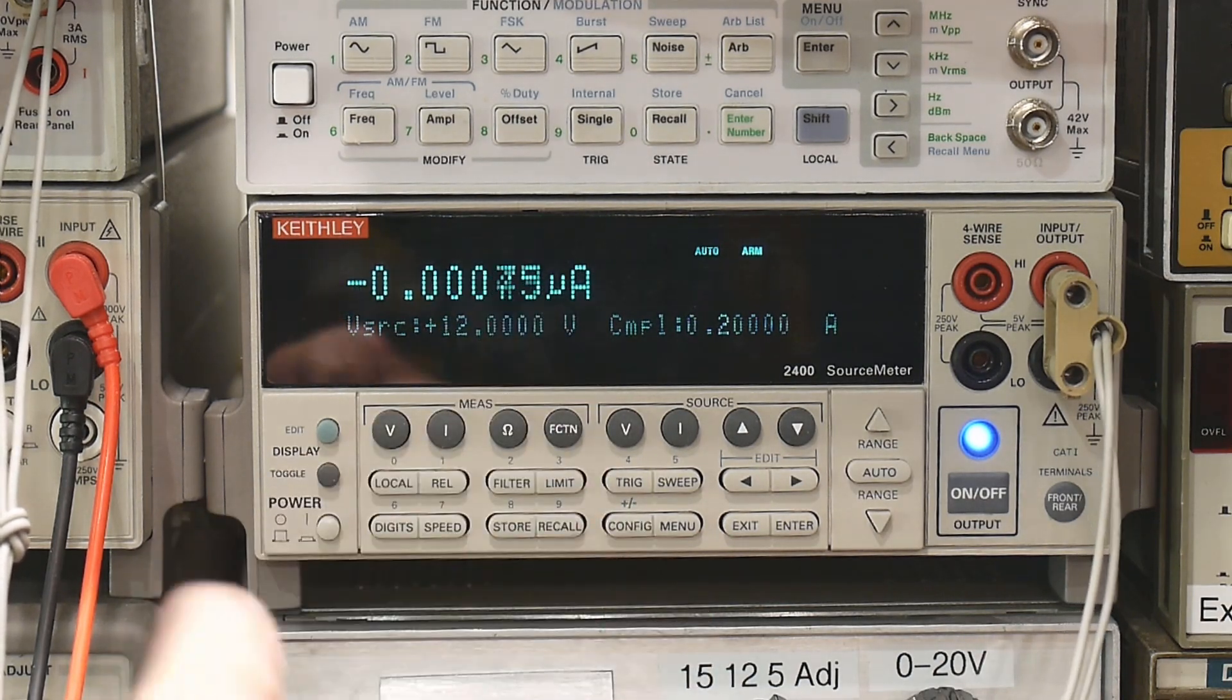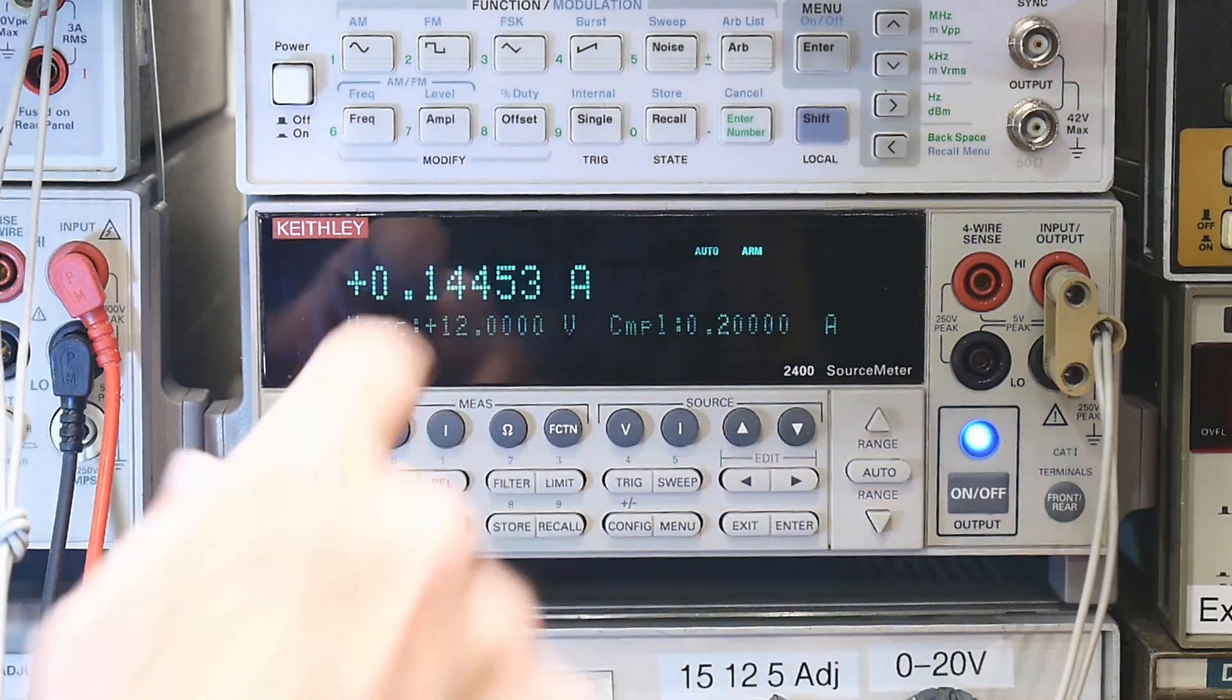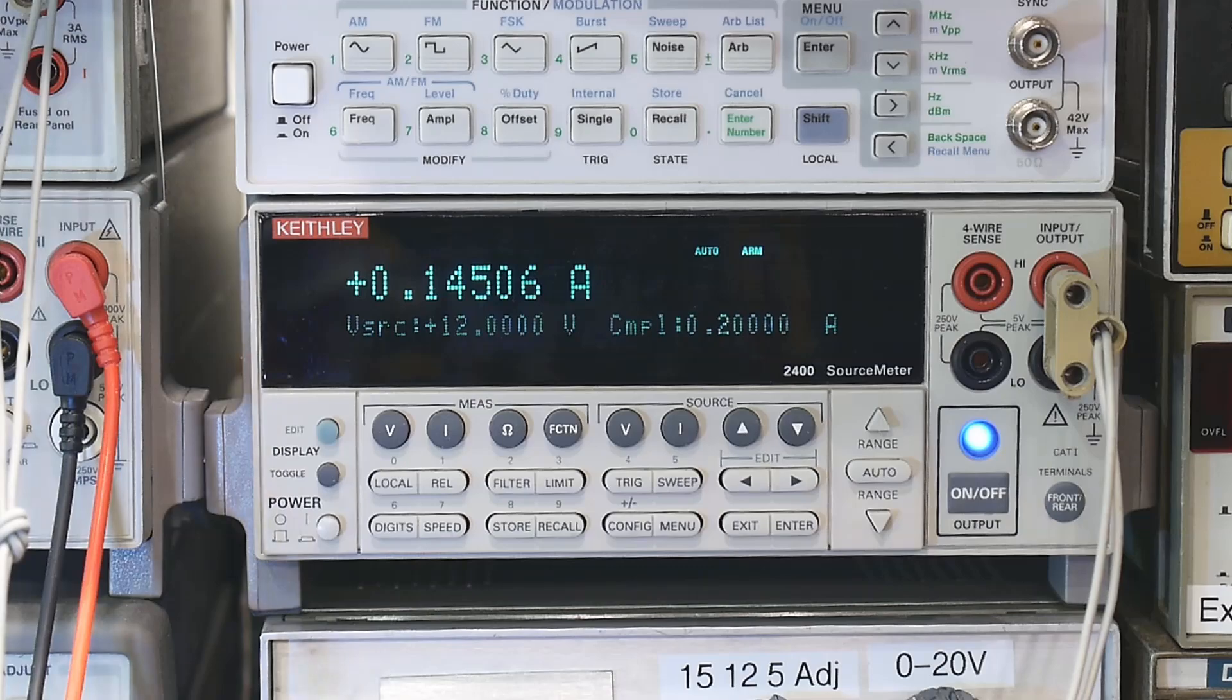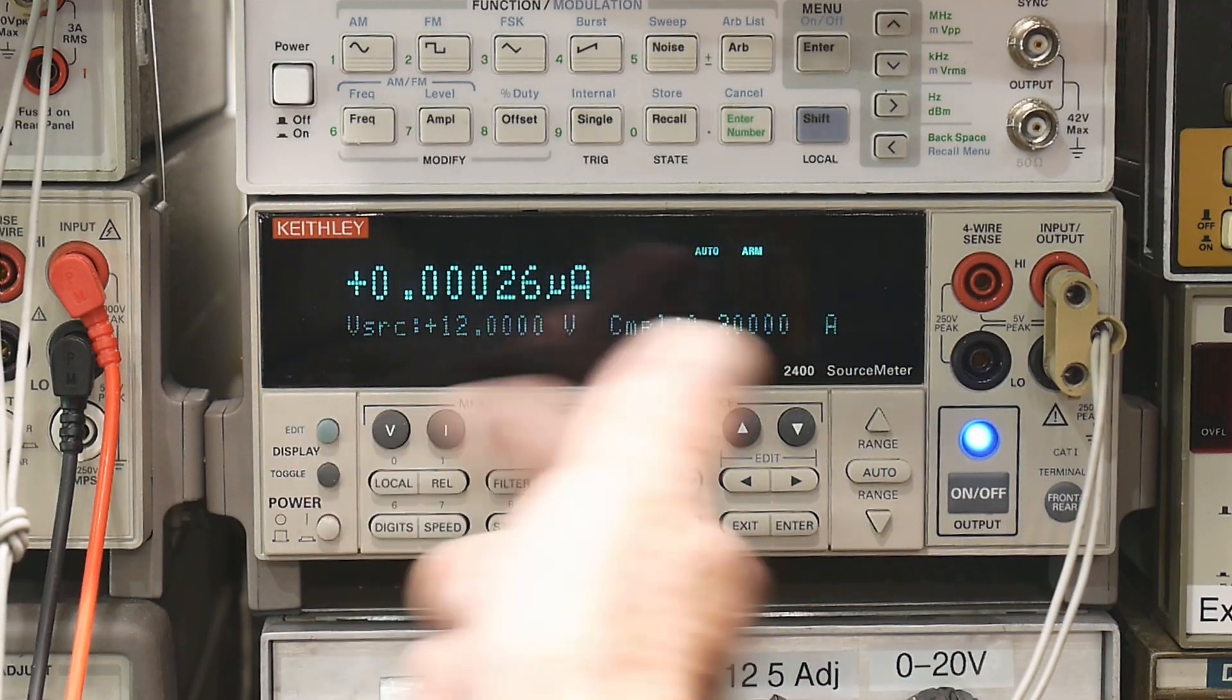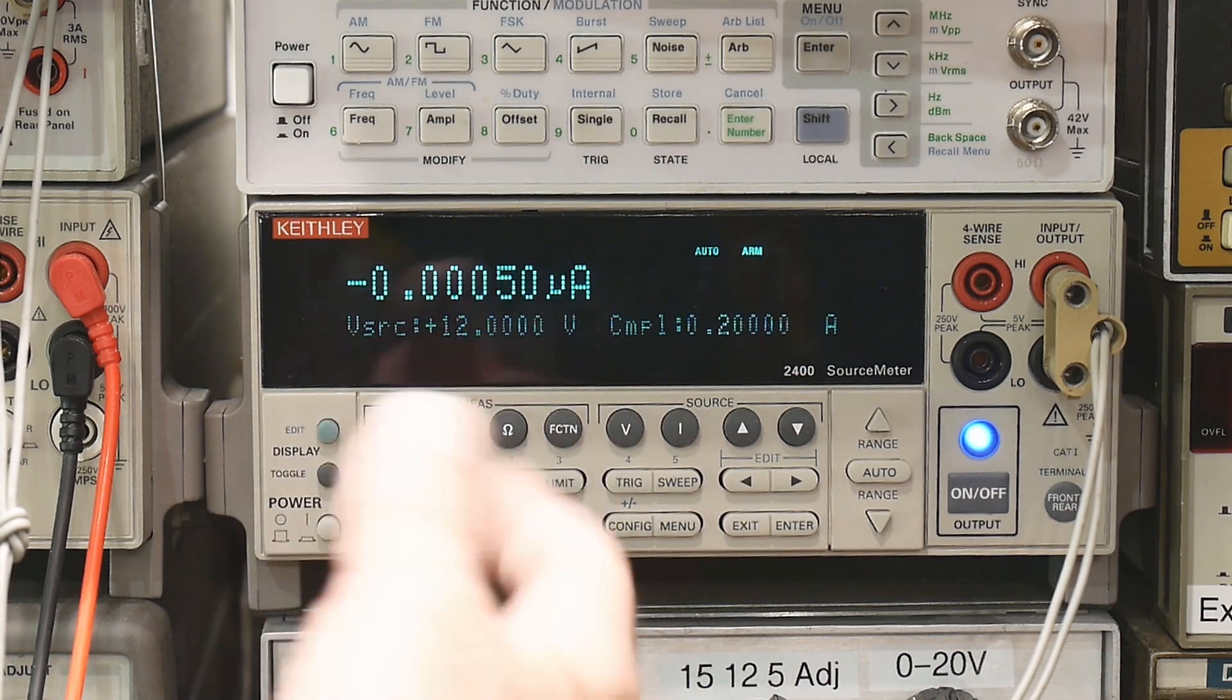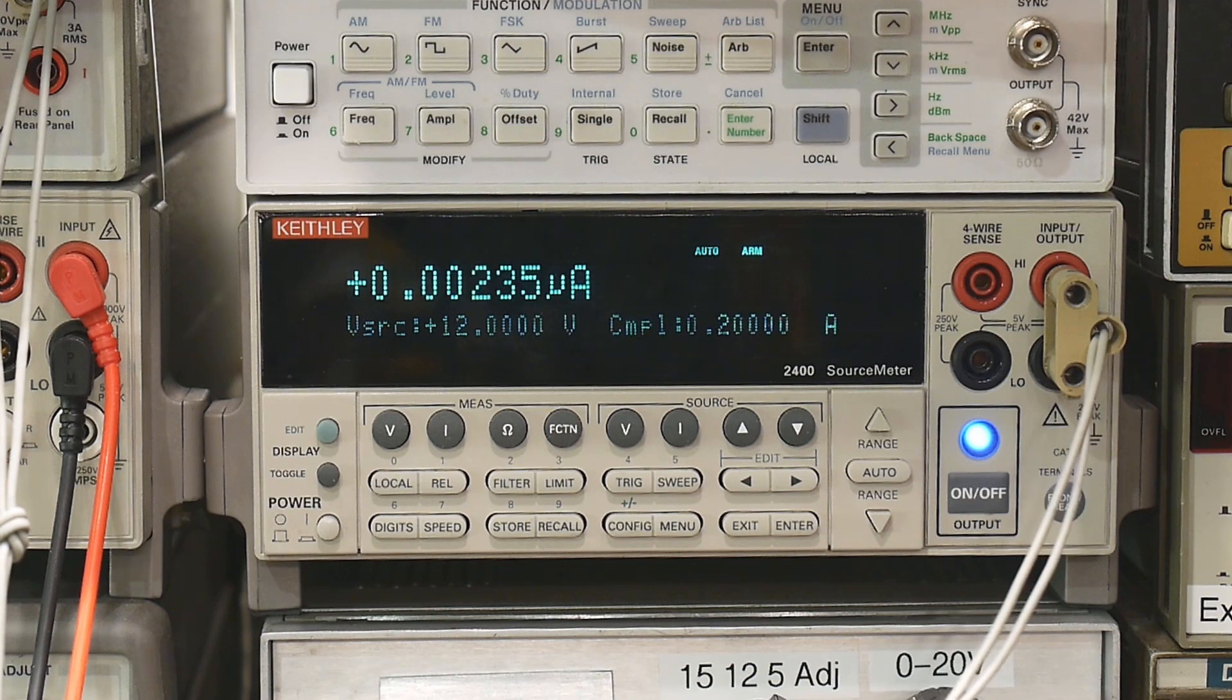We are measuring current here. And so it went to 144 milliamps at 12 volts. So we've done everything in the positive quadrant. We've done sourcing voltage and sourcing current, measuring voltage and measuring current. So that's the way this thing's normally used.